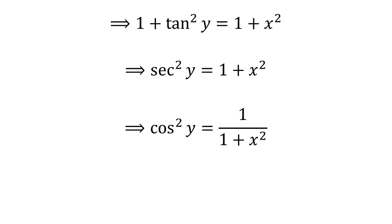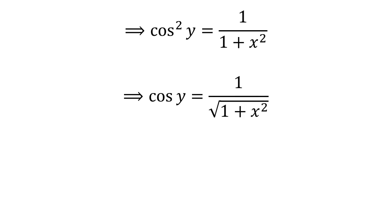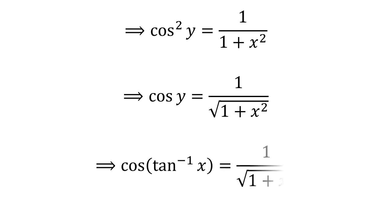Taking the reciprocal of both sides, we get cos²(y) = 1 divided by (1 + x²). Taking the square root of both sides gives cosine of y = 1 divided by the square root of (1 + x²). Since we assumed y = arctan(x), this implies cosine of arc tangent of x equals 1 divided by the square root of 1 plus x squared.